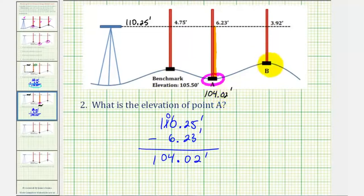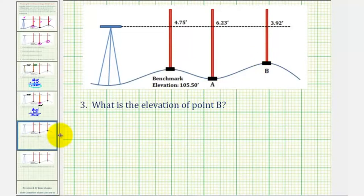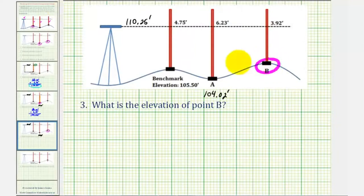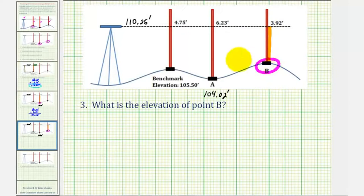Now we'll find the elevation at point B. Point B is here. To find the elevation at this point, we take the height of the instrument and subtract the reading of 3.92 feet, which is this distance here. That gives us the elevation at point B.